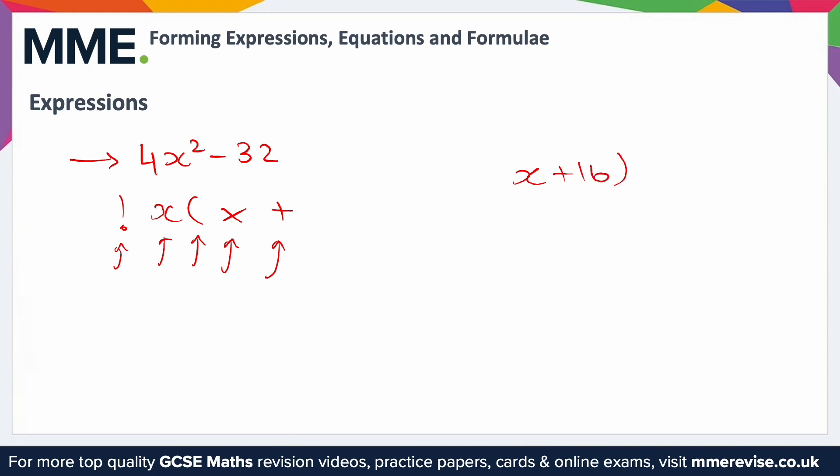The order of operations is really important here, so remember BIDMAS - where B is brackets, I is indices, D is division, M is multiplication, A is addition, and S is subtraction. In this case we have to put brackets around the x plus 16 because we want that done first.